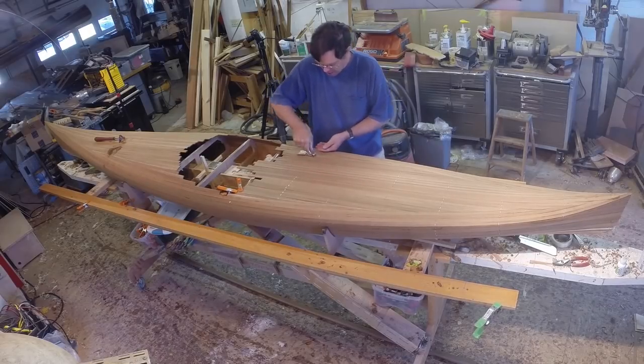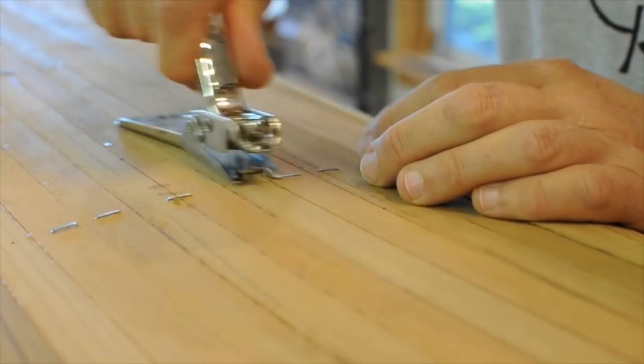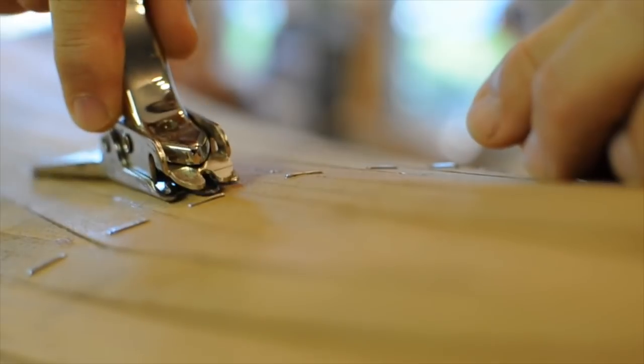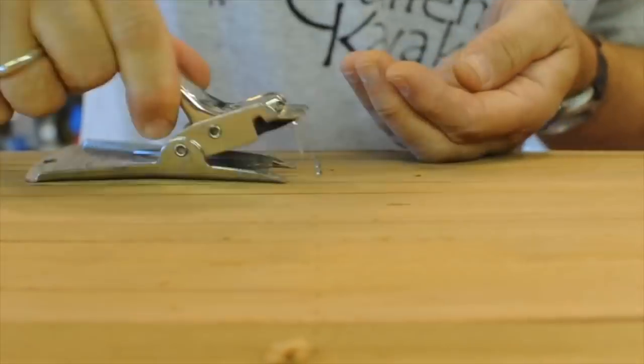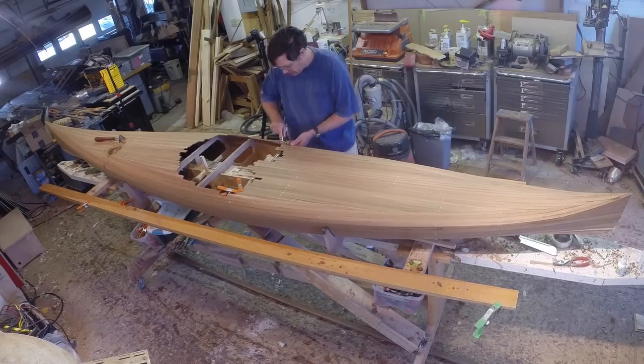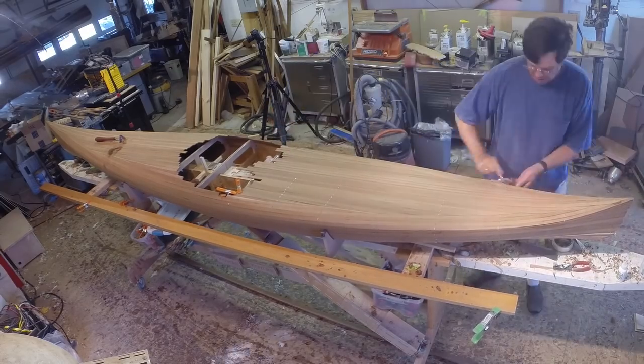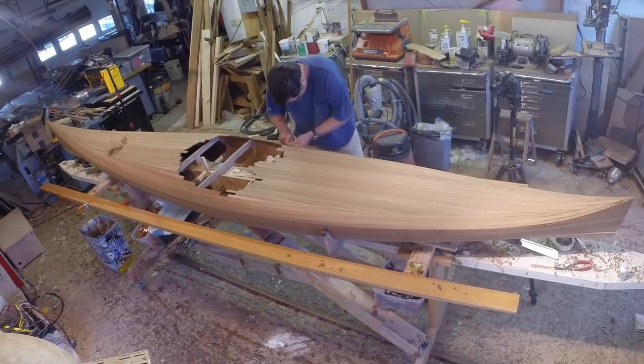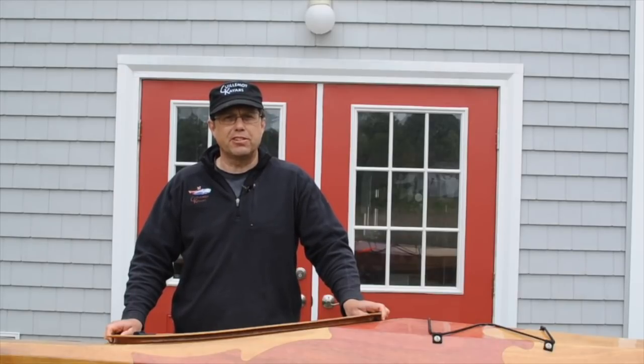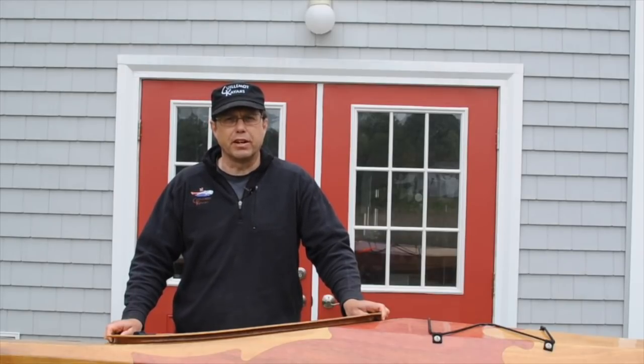When the glue dries, the staples can come out. We now have the kayak all stripped up. The next episode will be sanding and fairing. If you have any questions, please post them to the comments. Hit like, hit subscribe. Thanks for watching and happy paddling.